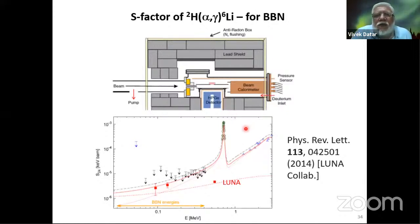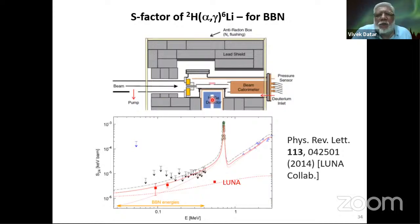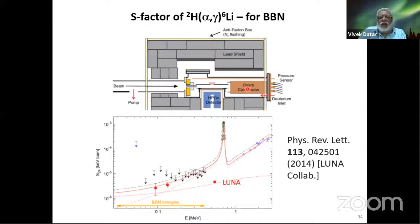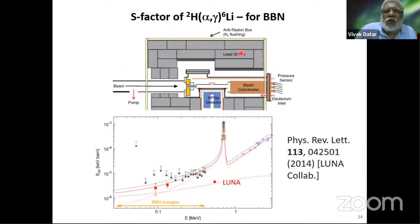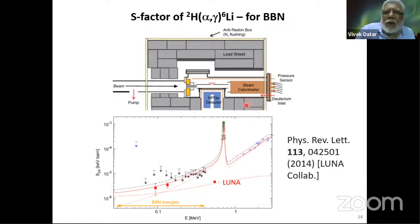The LUNA experiment used a windowless gas target with a very large high-purity germanium detector, which has good energy resolution. Since it was a very high current, they used a beam calorimeter, measuring the heat produced to calibrate the beam current. They did this at an underground location where the muon flux was reduced by a factor of 10 to 100 million, at about 1.5 km depth. To shield local radioactivity, they have a lead shield. This is a typical experiment for radiative capture measurements; some experiments also use veto detectors to remove contributions from remnant muons.